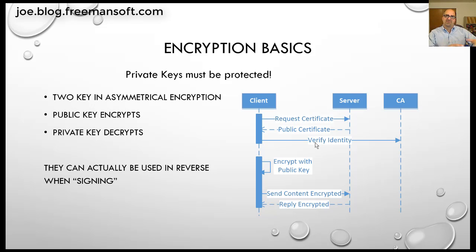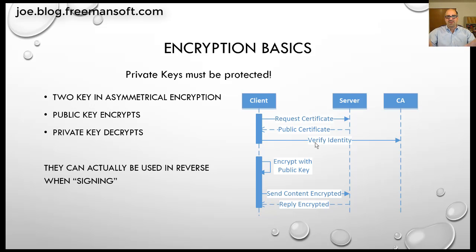So if you have a key that does encryption, its asymmetrical friend can do the decryption. And if I encrypt it with the first key, the first key can't decrypt it — only the second key can decrypt it. And actually, the reverse is true: if I encrypt with the second key, only the first key can decrypt it.